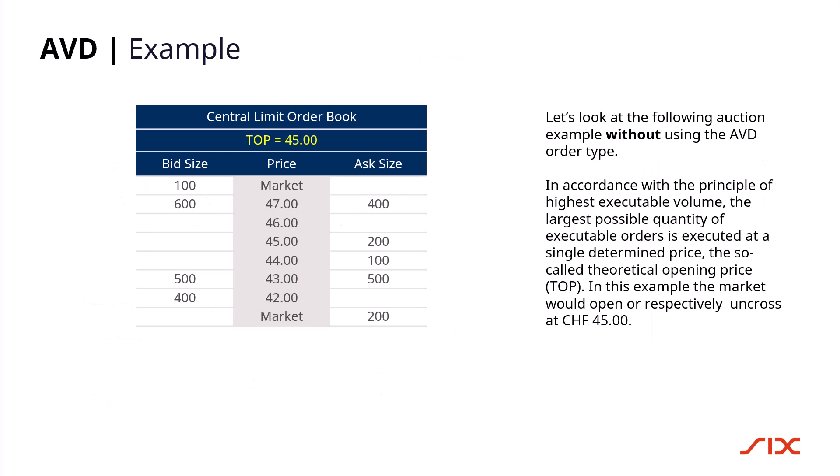Let's look at the following auction example without using the AVD order type. In accordance with the principle of highest executable volume, the largest possible quantity of executable orders is executed at a single determined price, the so-called theoretical opening price. In this example, the market would open or respectively uncross at 45 Swiss francs.